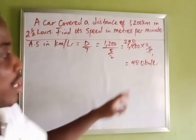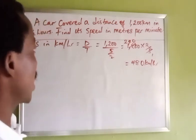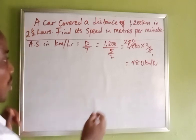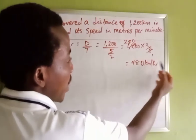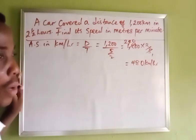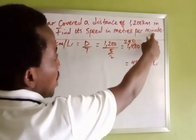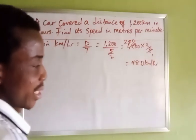So what we have here is the speed of the car in kilometers per hour. Now let's convert it to meters per minute. To convert kilometers to meters, we multiply by 1,000. And to convert from hours to minutes, we divide by 60.